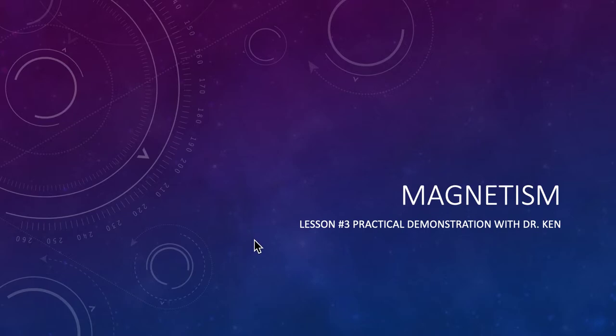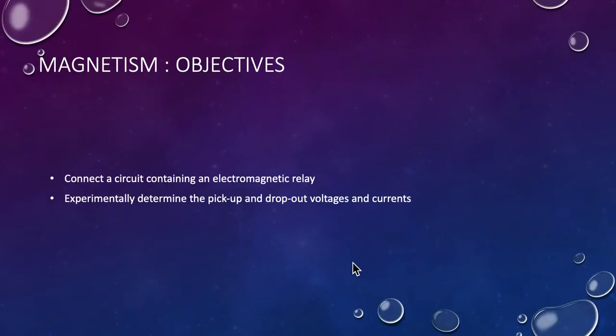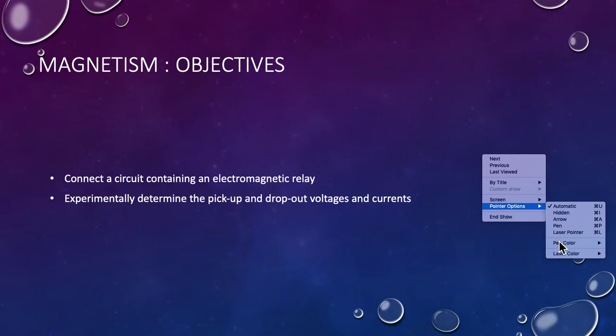In this practical demo, our objective is to connect a circuit containing an electromagnetic relay, then experimentally determine what the pickup and dropout voltages and currents are, and look at those relationships and what's going on in that particular reasonably simplistic magnetic circuit.